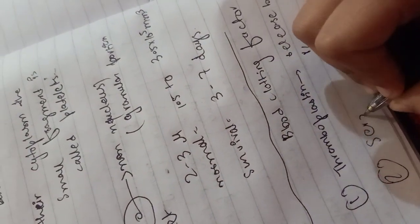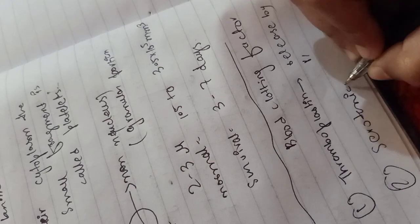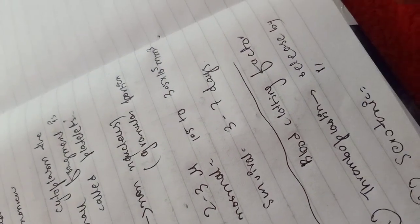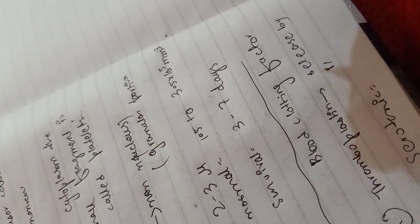Second, we have serotonin. This works in vasoconstriction, which means the narrowing of blood vessels. This is also released by the platelets when there is any kind of injury.